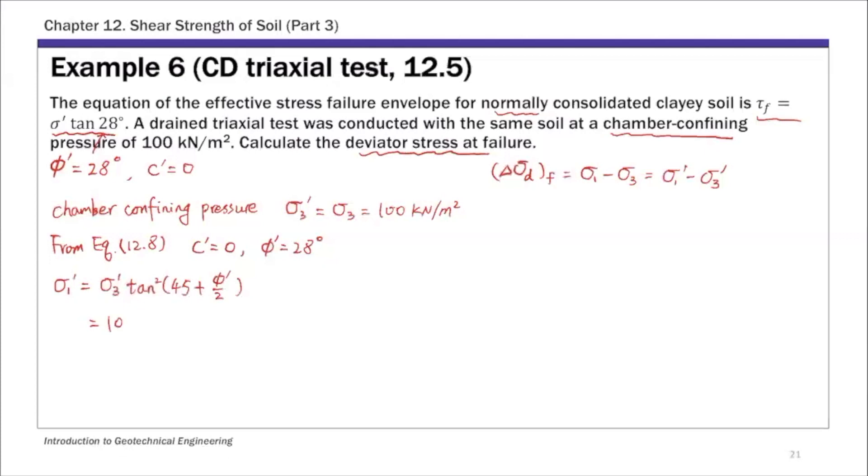And substitute these numbers: 100 times tan²(45 + 28/2) = 277. So simple, just substitute these two numbers into equation 12.8.